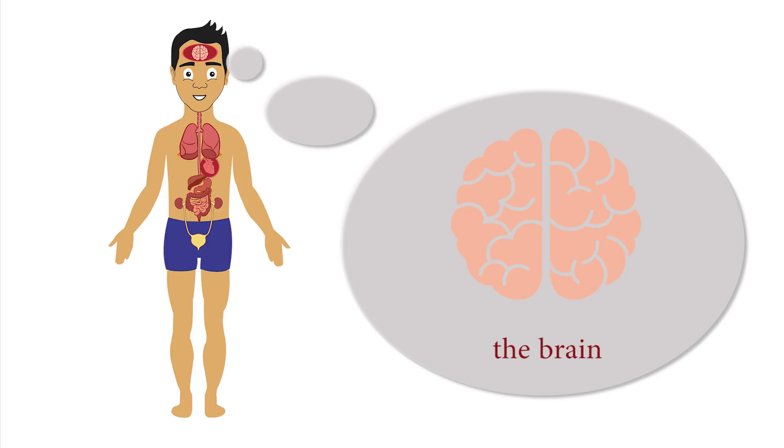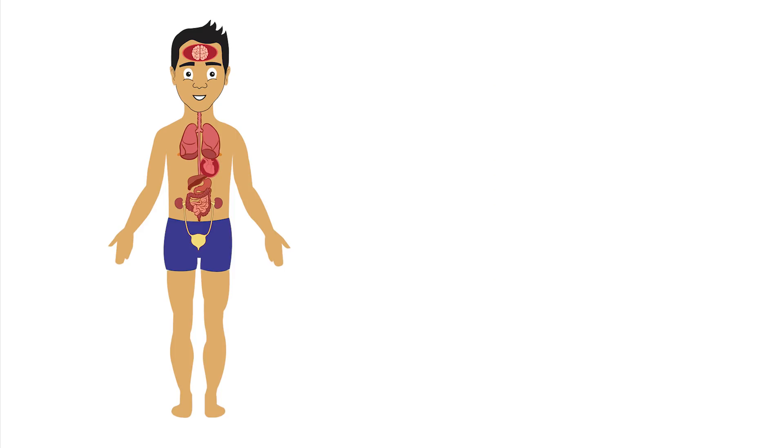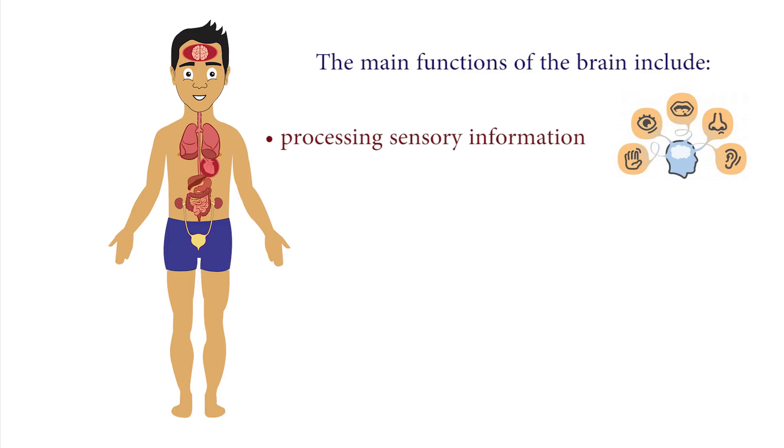Next is the brain. The brain is a very busy organ that works day and night. It is made of a large mass of nerve tissue and is protected by the skull. The main functions of the brain include processing sensory information, regulating blood pressure and breathing, and releasing hormones.